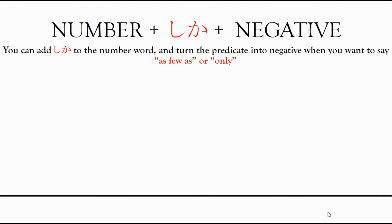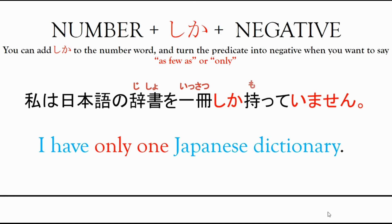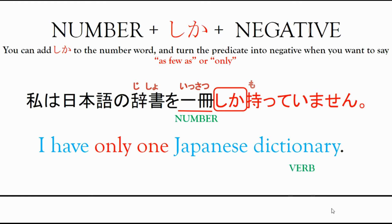Next, for shika. The pattern is: number + shika + negative. You can add shika to a number word to turn the predicate into negative when you want to say 'as few as' or 'only'. For example: I have only one Japanese dictionary. The number here is issatsu. We use shika to state 'as few as' or 'only', and the predicate must be in the negative.